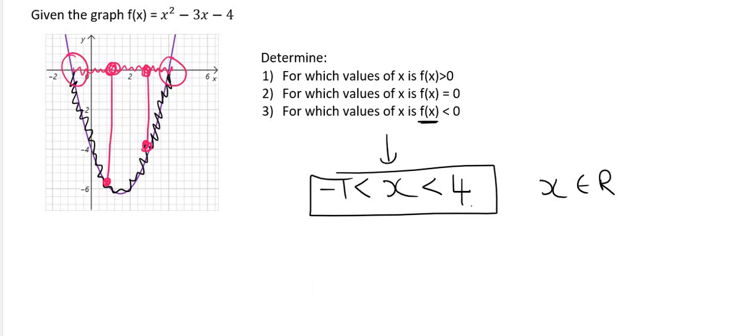Okay, and then you would also say that x is an element of all real numbers. So what this says is that x is all the numbers that are bigger than minus 1. So minus 1, 0, 1, 2. But at the same time, x must also be less than 4. So it's all the x values in between there. 1, 2, 3.